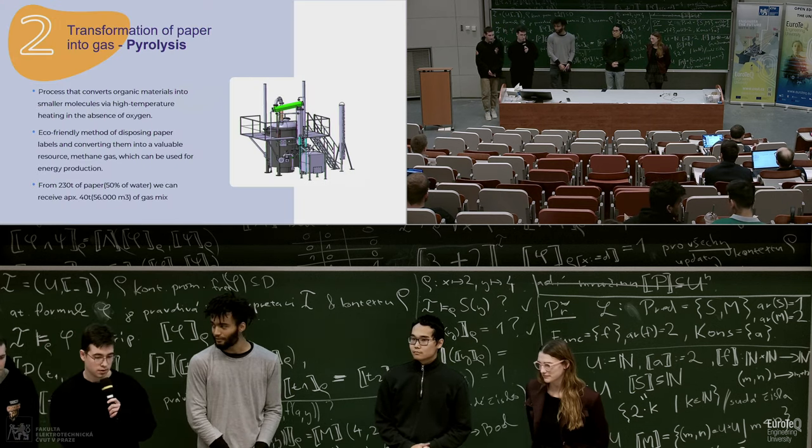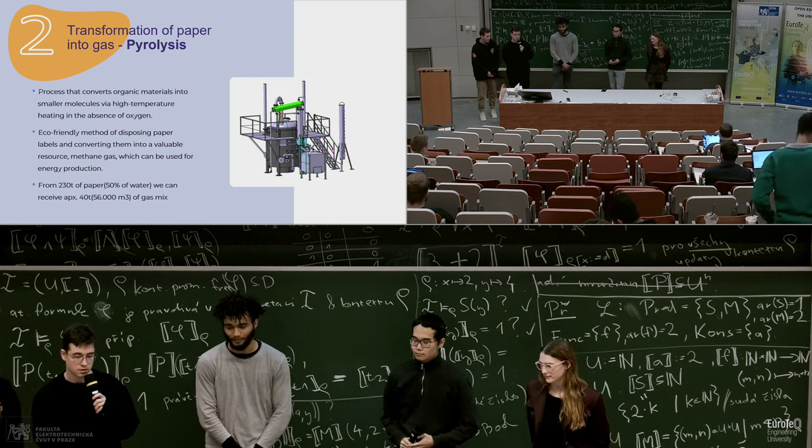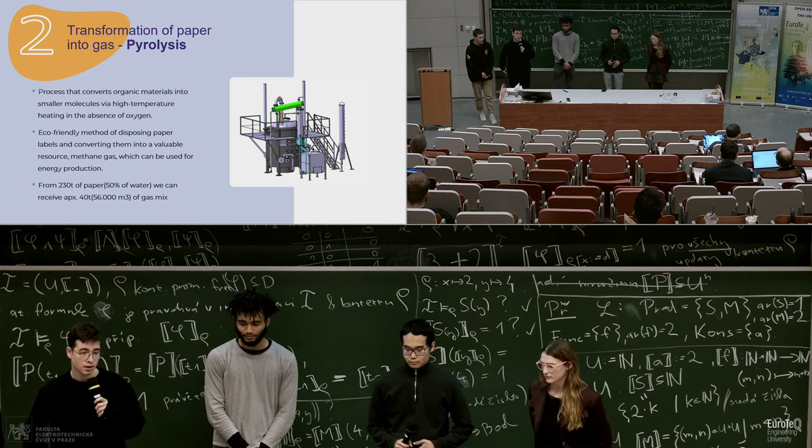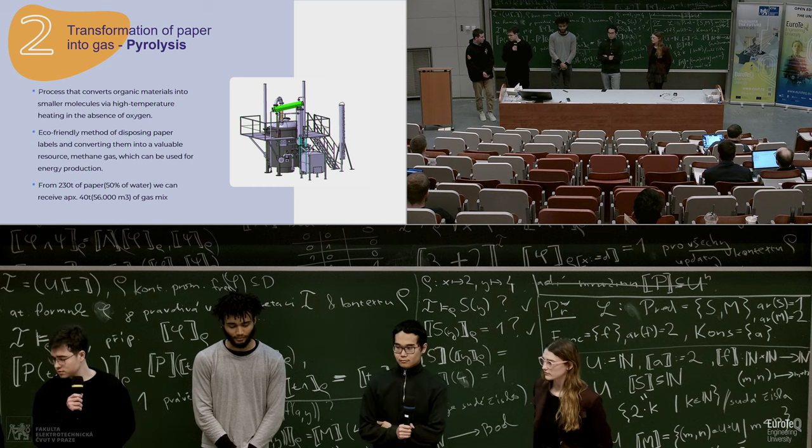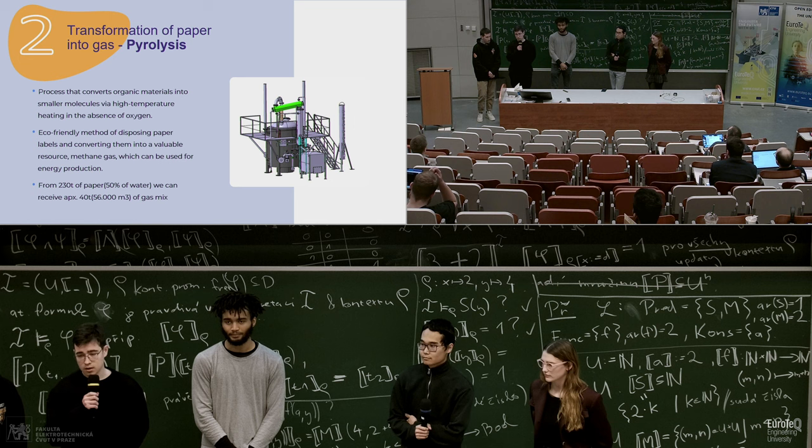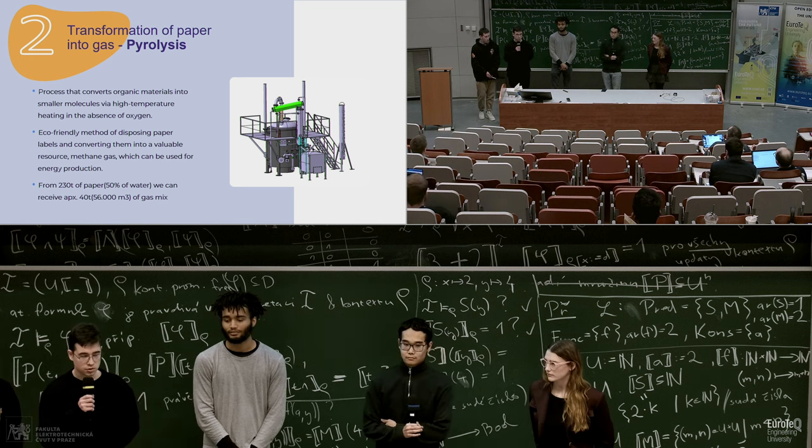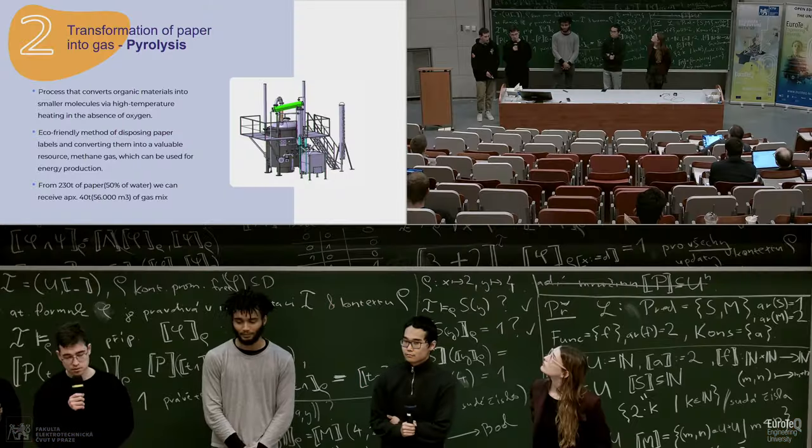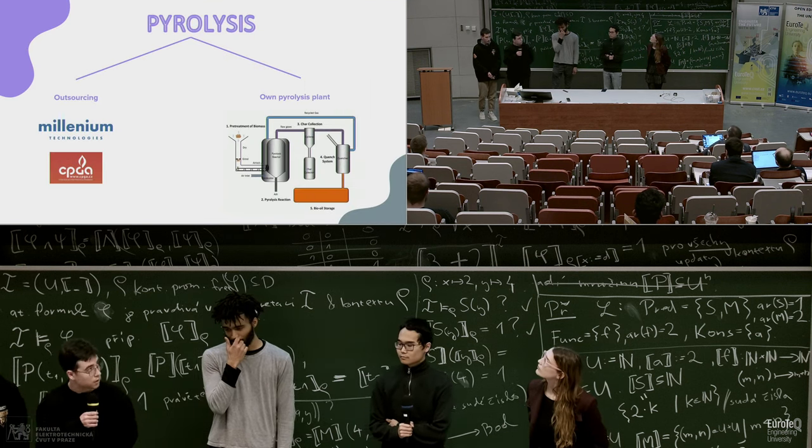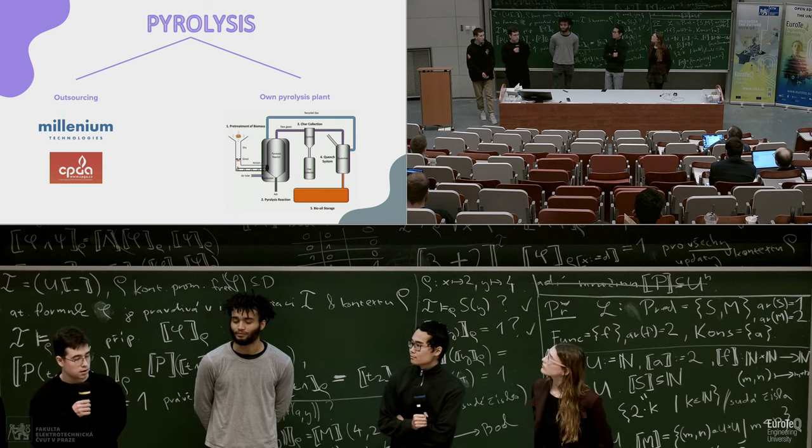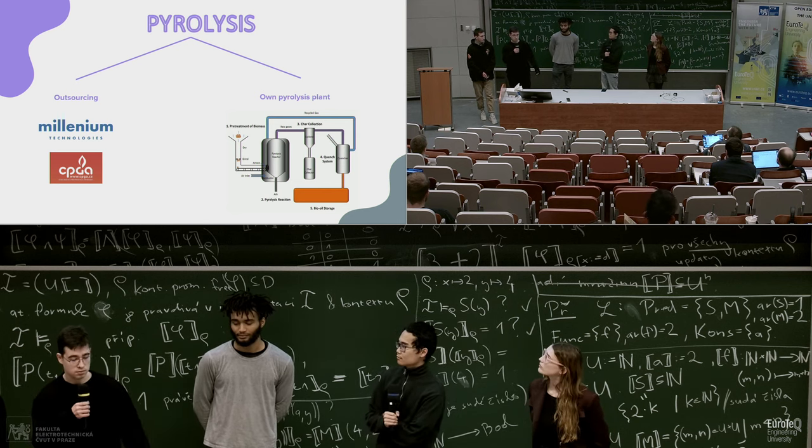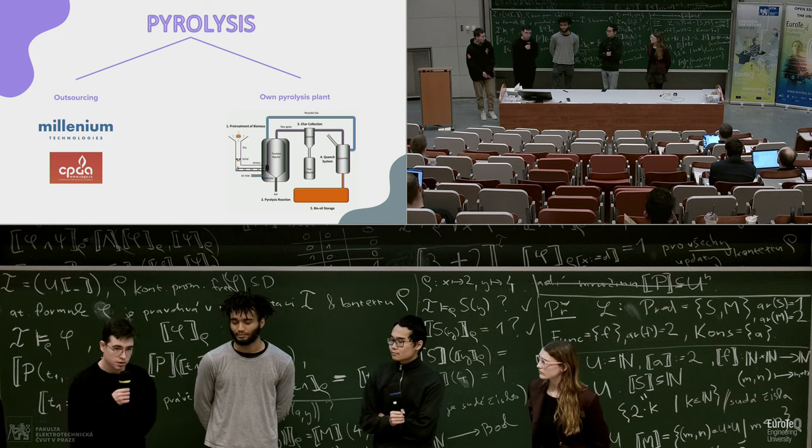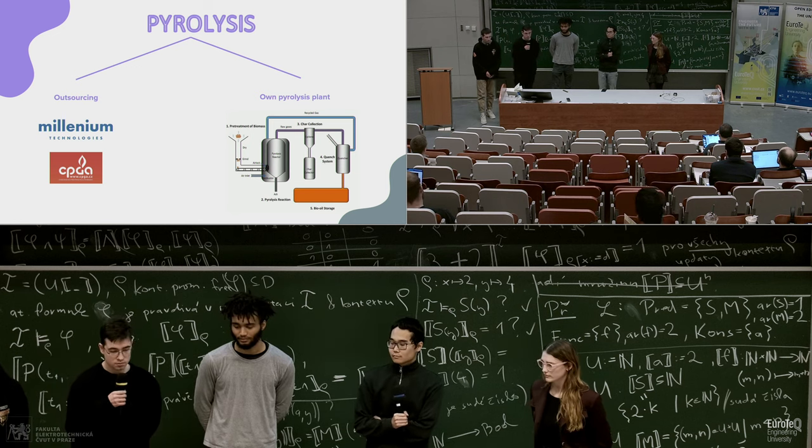The second solution is a process of converting solid materials to, for example, gas. It's called pyrolysis. It's a very eco-friendly process. From 20 to 130 tons of paper, we can produce approximately 56,000 cubic meters of gas mix. For this, we have two ways. First, it's outsourcing. We will send paper to another company and receive gas mix. And second, it's own pyrolysis plant. It's a little bit harder, but more efficient and more saved money.